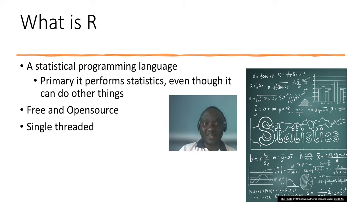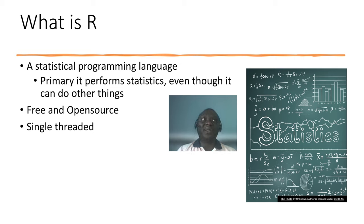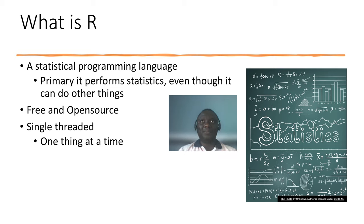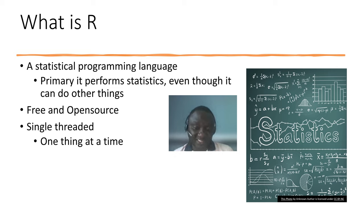R is single-threaded — it does one thing at a time. That comes with some advantages and some disadvantages, which we may look at in the course of this series. If you are not a technical person you don't need to worry so much about something being single-threaded; you would mostly notice it by seeing that it's doing one thing at a time. R is also interpreted — you write your code and it gets executed; it doesn't get compiled.